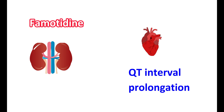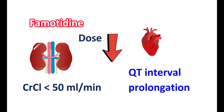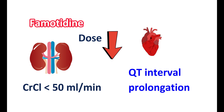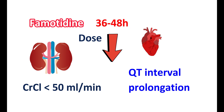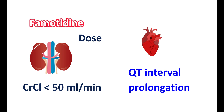In people with renal impairment, excretion of famotidine is reduced, leading to more retention in the body and increased QT prolongation. Therefore, the dose of famotidine should be reduced. When creatinine clearance is less than 50 mL per minute, the dose should be reduced to half. Alternatively, the dosing interval can be modified — normally taken twice daily for eight weeks, but in renal impairment it can be taken every 36 to 48 hours to reduce accumulation.